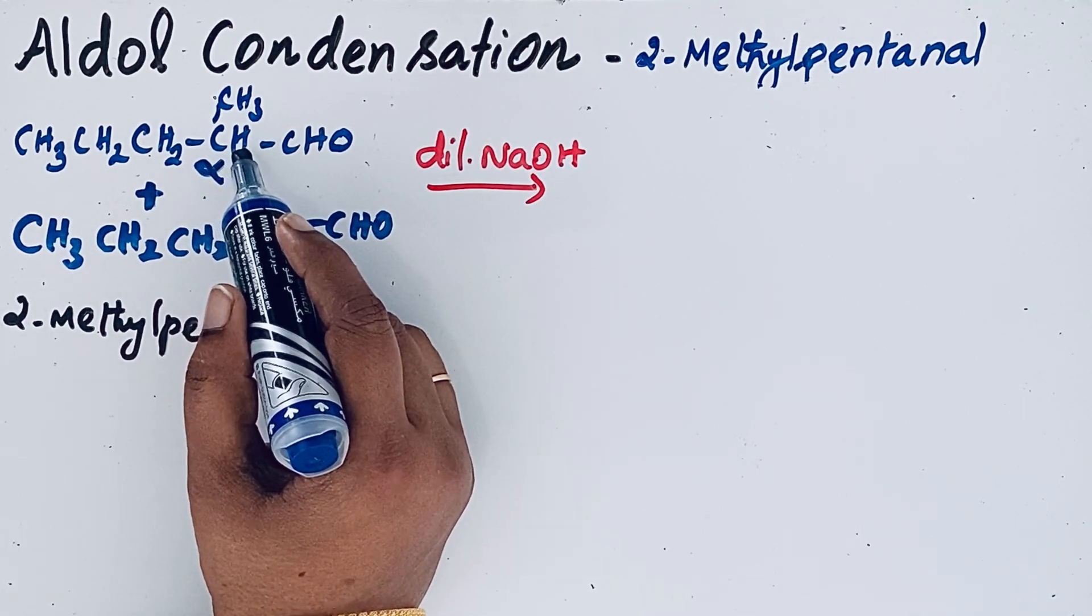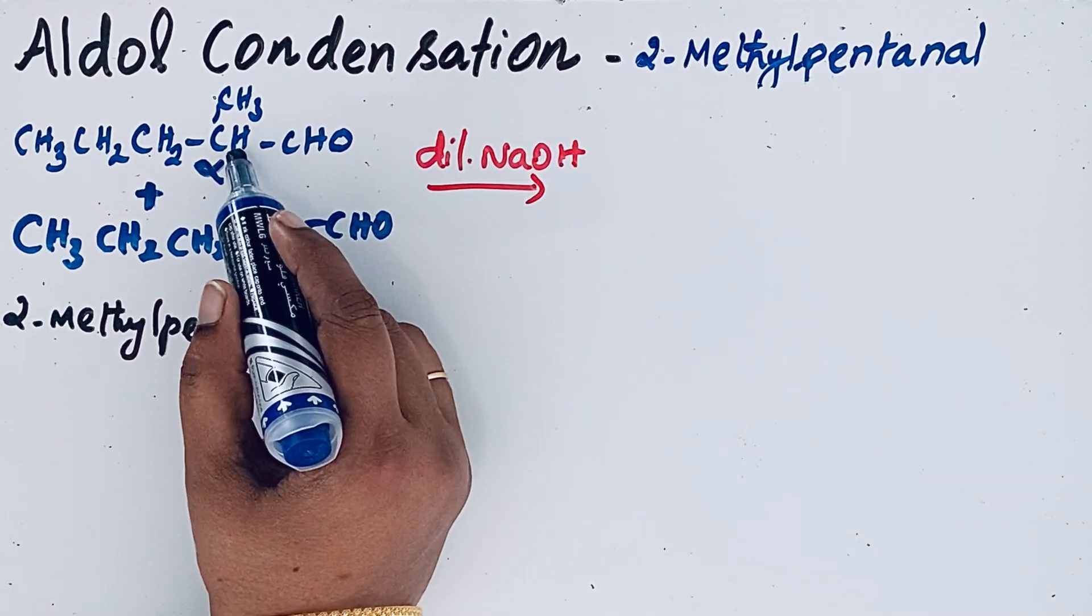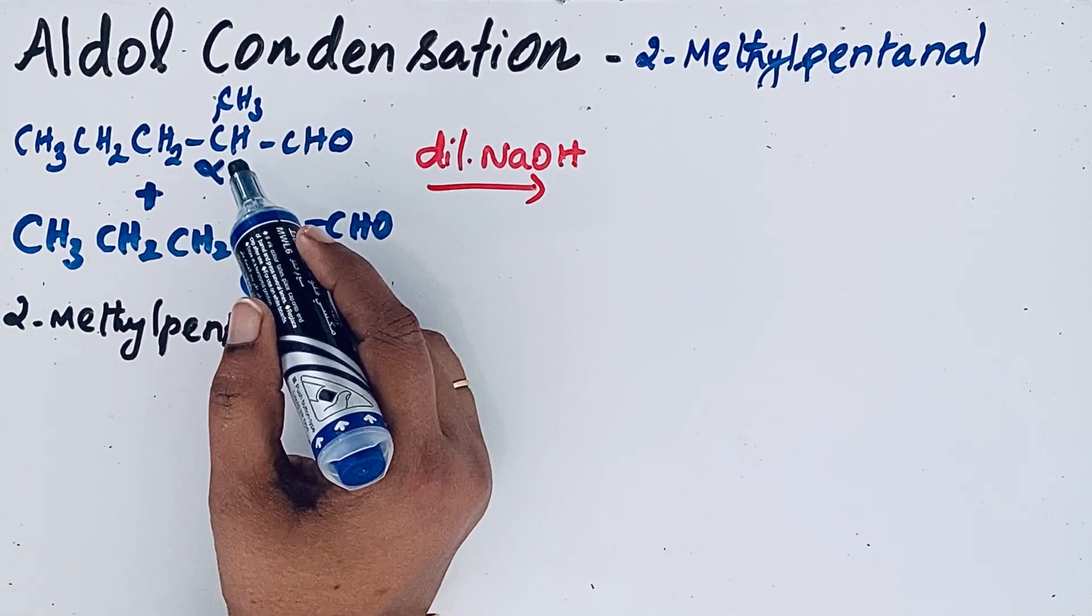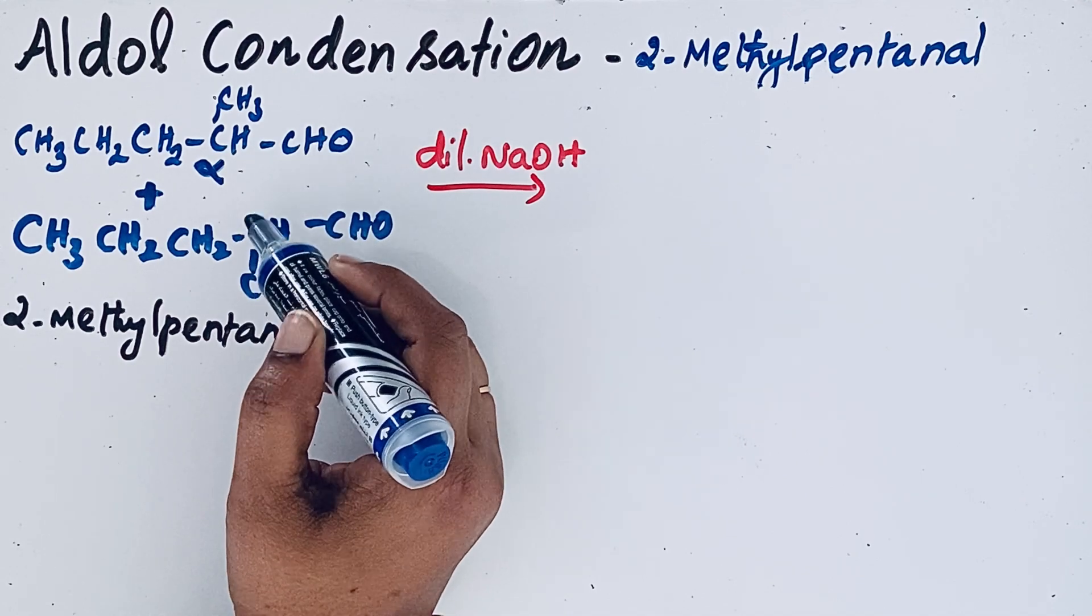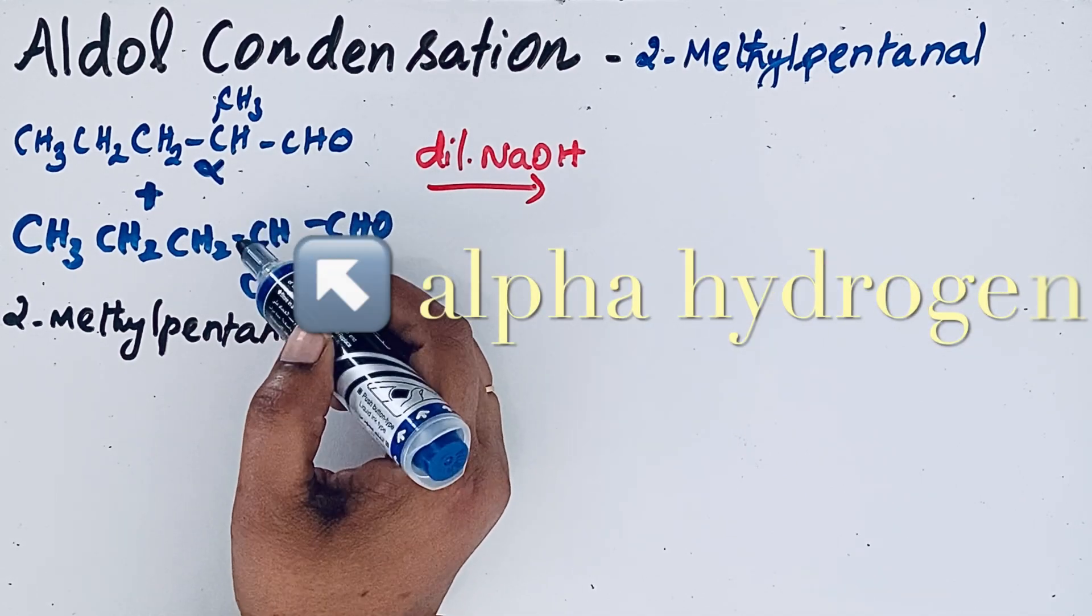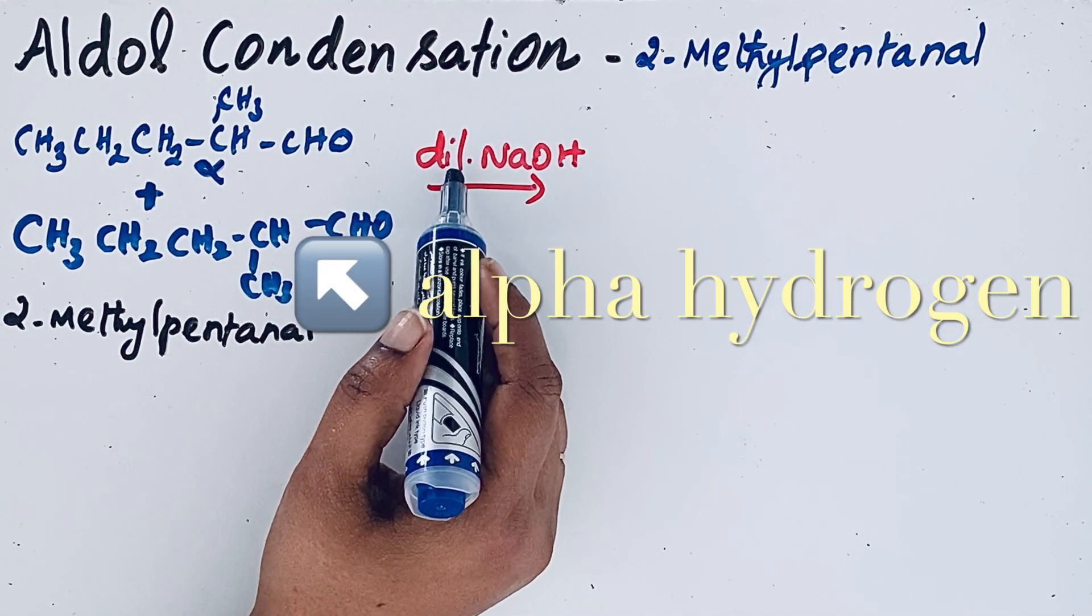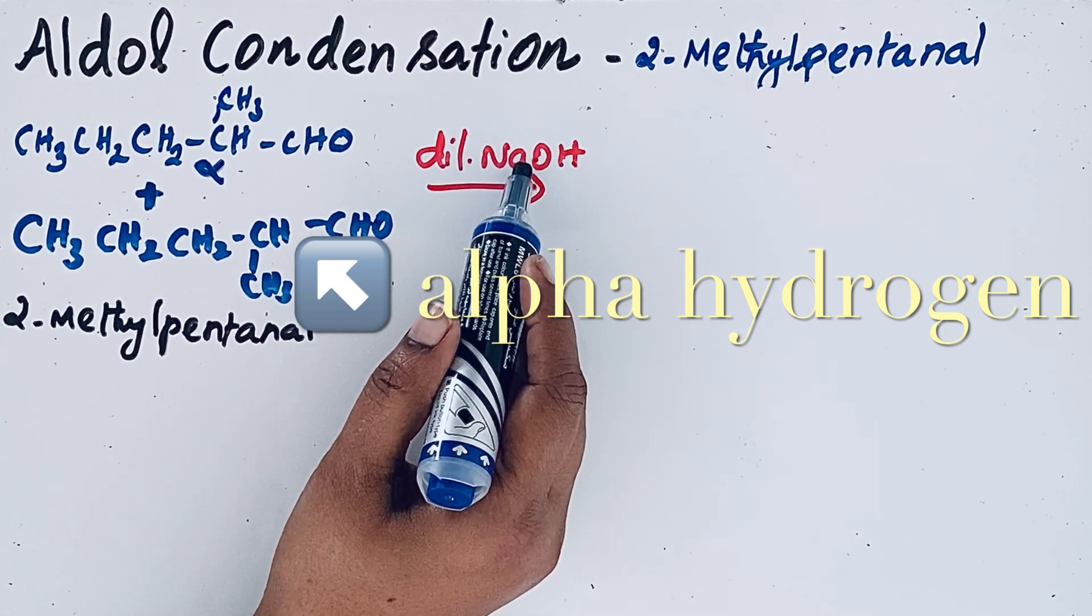So in 2-methyl pentanal, we have that one alpha hydrogen atom. In this aldol reaction, there are two molecules of 2-methyl pentanal involved. So under the influence of dilute sodium hydroxide, it is a base.